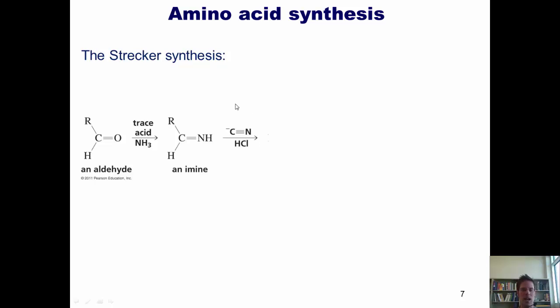I can now treat this imine with cyanide, and the cyanide nucleophile goes into the carbon, kicks the electrons up onto the nitrogen, which then gets protonated in acidic solution to give this. I'll let you look at that for a while if you wish. At this stage, you may remember we can convert a nitrile, this carbon triply bonded to nitrogen, into a carboxylic acid by reacting it with acid and water. That gives me this amino acid product.